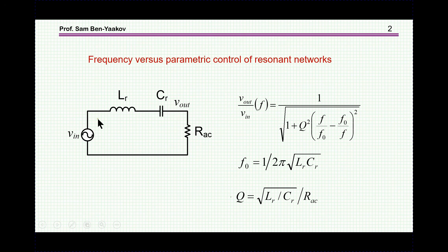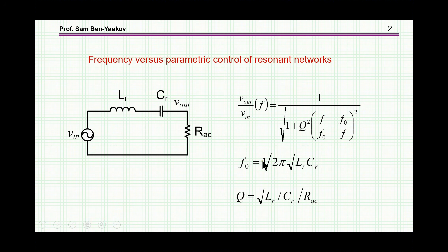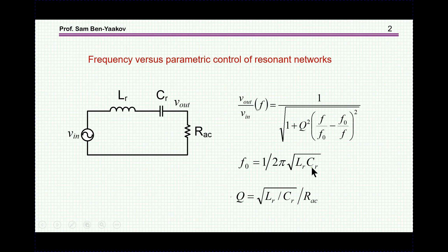The resonant network is a precursor of resonant converters. A series resonant network includes an input voltage, an inductor, a resonant capacitor, and a resistor representing the load. Energy can be transferred between input and output by changing the frequency. The frequency response between input and output is given here; Q is the quality factor depending on the characteristic impedance and the load, while the transfer function is a function of f over f0, where f is the switching or excitation frequency and f0 is the resonant frequency, which is a function of the resonant inductor and resonant capacitor.